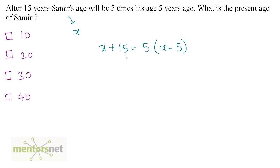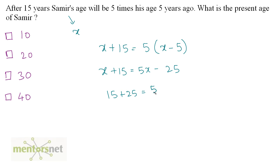We can solve this and find out the current age of Samir. So, x plus 15 is equal to 5x minus 25. So, 15 plus 25 is equal to 5x minus x. Therefore, 15 plus 25 is 40, equal to 4x. Therefore, x is equal to 40 by 4, which is 10.